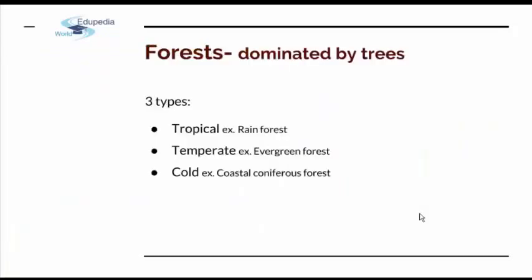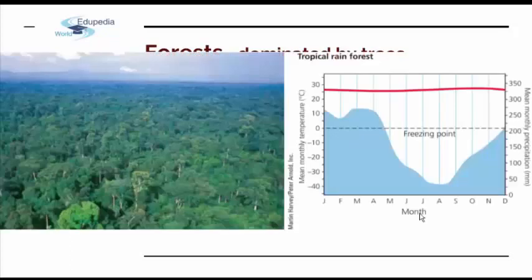The next type of biome is forests, which — opposite from grasslands — are dominated by trees. Like the previous ones, this biome also consists of three main types: tropical, temperate, and cold. As a tropical example we have the rainforest, the temperate example is the evergreen forest, and the cold example is the coastal coniferous forest. Tropical rainforests are found near the equator and are very hot and moist. The air is really moisture-laden, rising and dumping its moisture throughout the year. Precipitation is very high, temperature is relatively static around 30 degrees, and humidity is very high for most of the year.